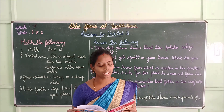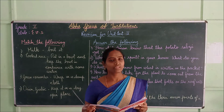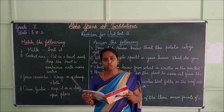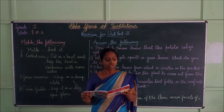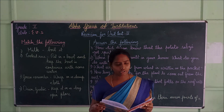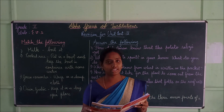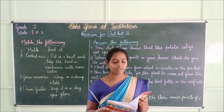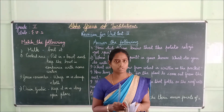Fourth one: ripe mangoes should be used for making mamadi tundra — true. Fifth one: glass jars and bottles are dried in the sun to remove any moisture — true.